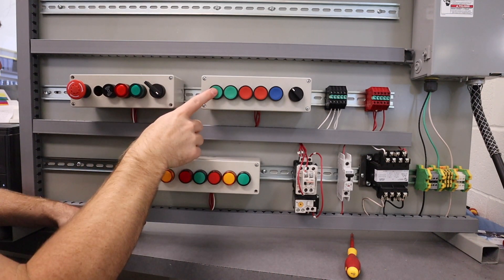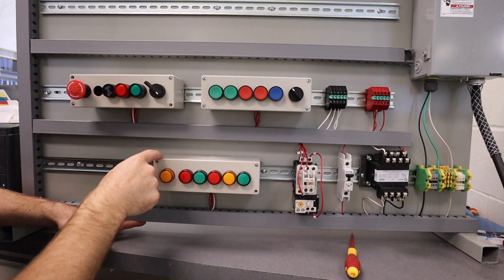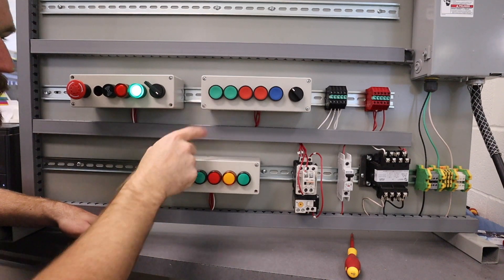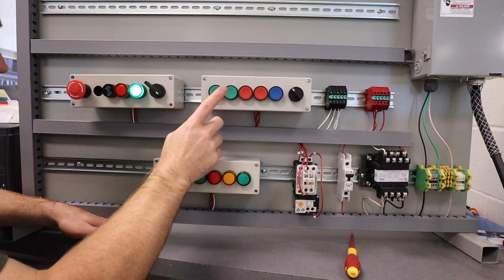I'll turn it off. If this is not pressed in and I press my start button, nothing happens. So again, press this in. I give it permission with this button, press that one, coil pulls in and it works.